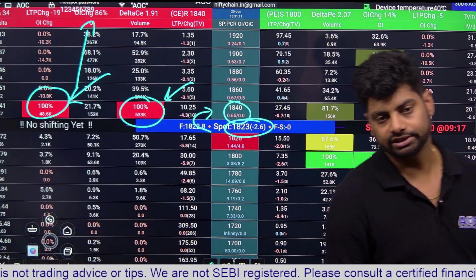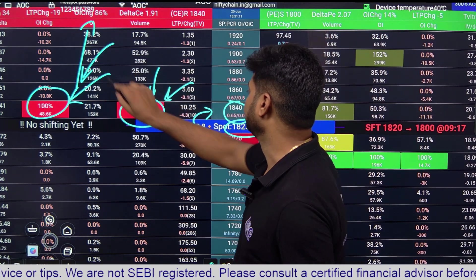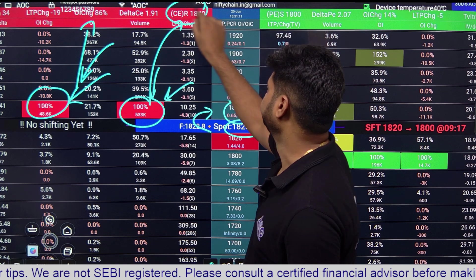So in this case our resistance is 1840 because of volume and OI. You can also see this here on the header.